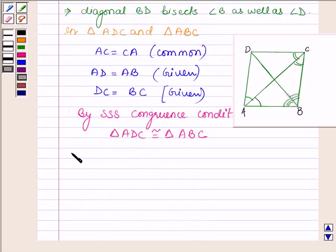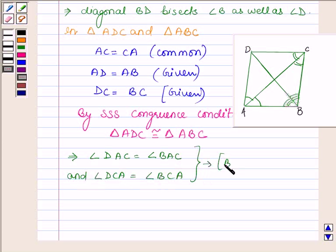which further implies angle DAC is equal to angle BAC and angle DCA is equal to angle BCA. So this is by CPCT, corresponding parts of congruent triangles are equal, and this implies that diagonal AC bisects angle A as well as angle C.